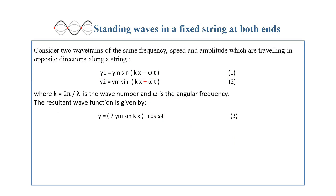Consider two wave trains of the same frequency, speed, and amplitude which are traveling in opposite directions along a string. y1 is ym sin(kx − ωt), y2 is ym sin(kx + ωt), where k equals 2π over λ is the wave number, and ω is the angular frequency. The resultant wave function is given by y equals 2ym sin(kx) cosine(ωt).